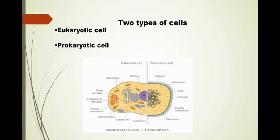So there are two types of cell: the prokaryotic cell and the eukaryotic cell.